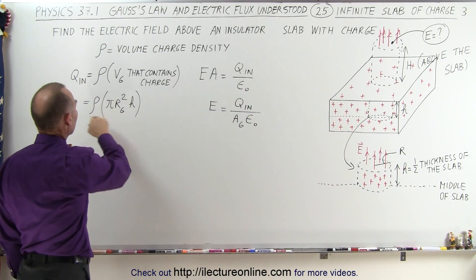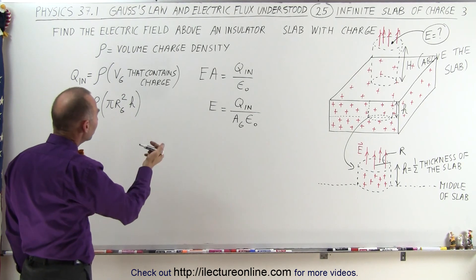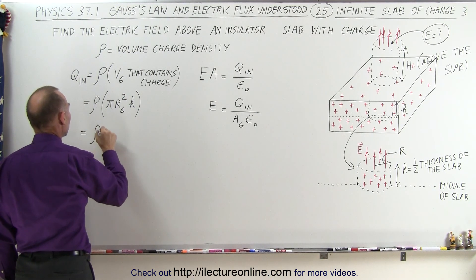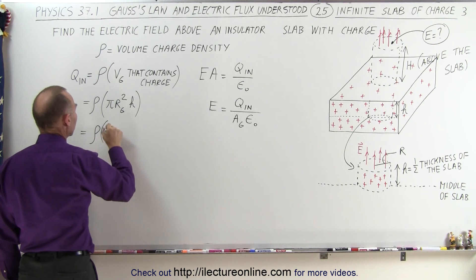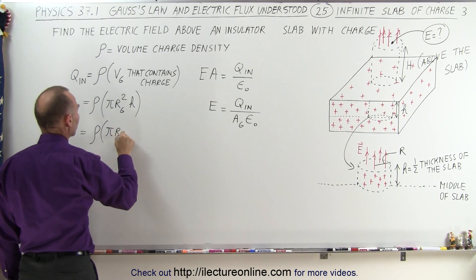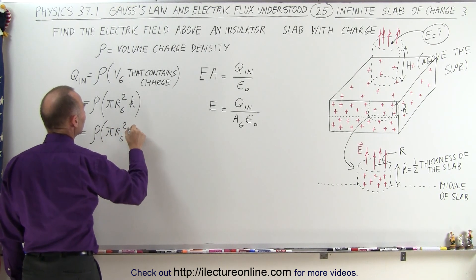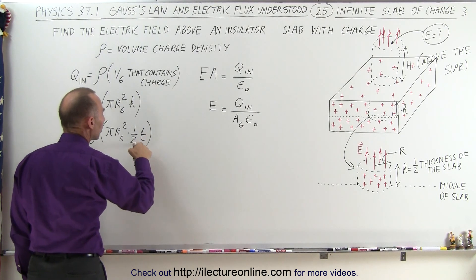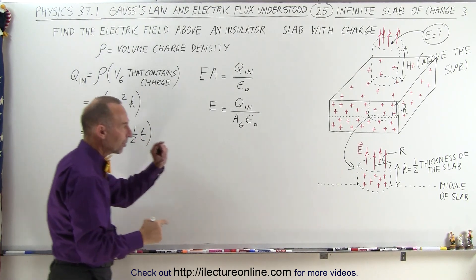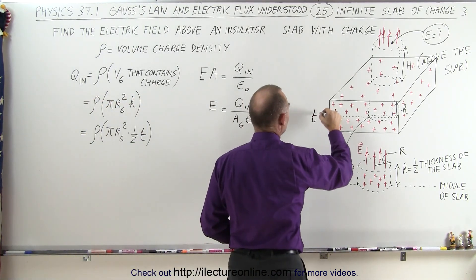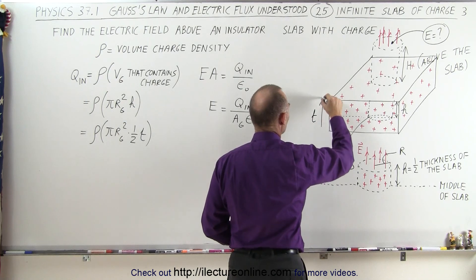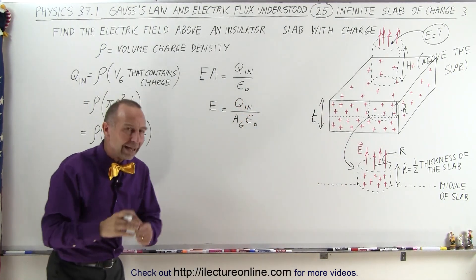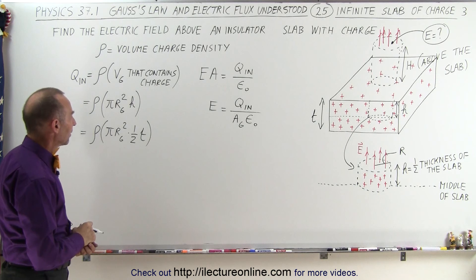We could also write it as the charge density times pi r sub g squared times one-half the thickness of the slab, where t is simply the thickness of the slab. That's another way to express the charge inside the Gaussian surface.